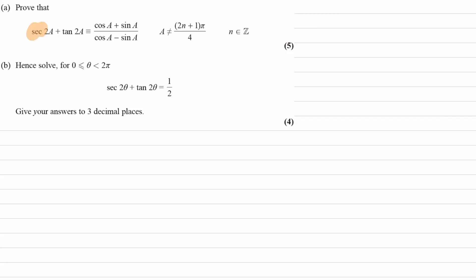Prove that sec 2a plus tan 2a is equal to cos a plus sin a over cos a minus sin a.